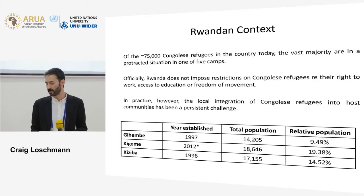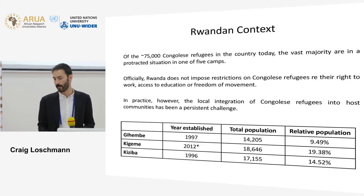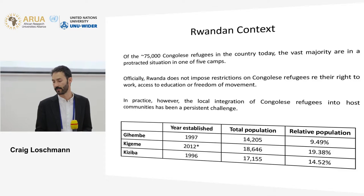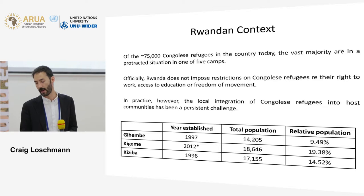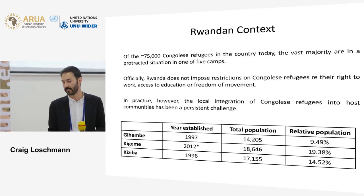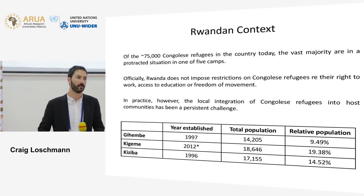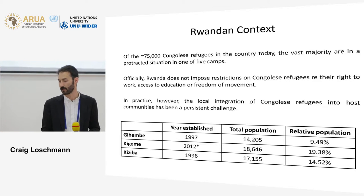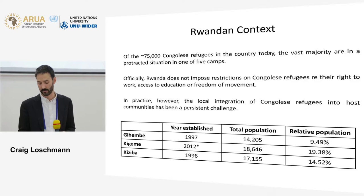In terms of population, the total population of these camps ranges from about 14,000 to about 19,000 individuals. More importantly, relative to the local host communities, it ranges from about 9% to 19%. These aren't huge numbers, but they're not minimal either — they represent a relatively significant increase in population.